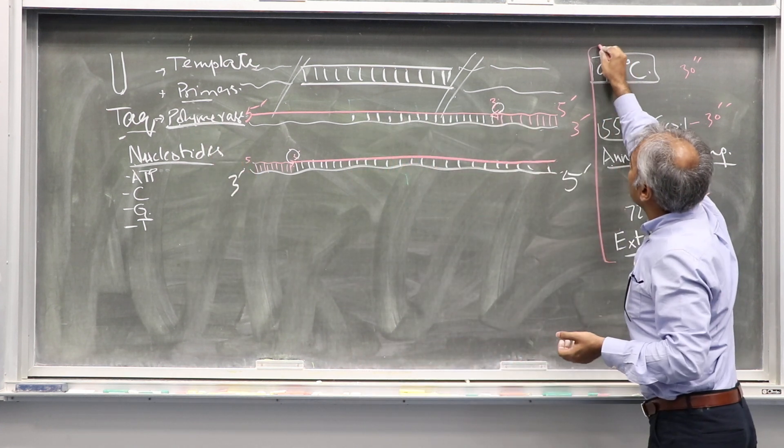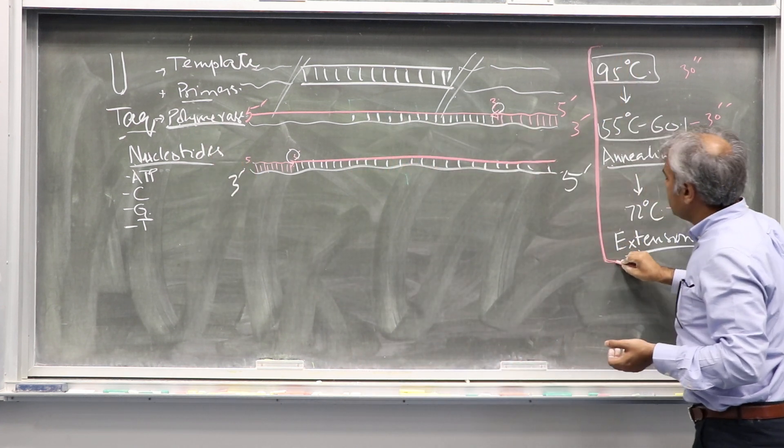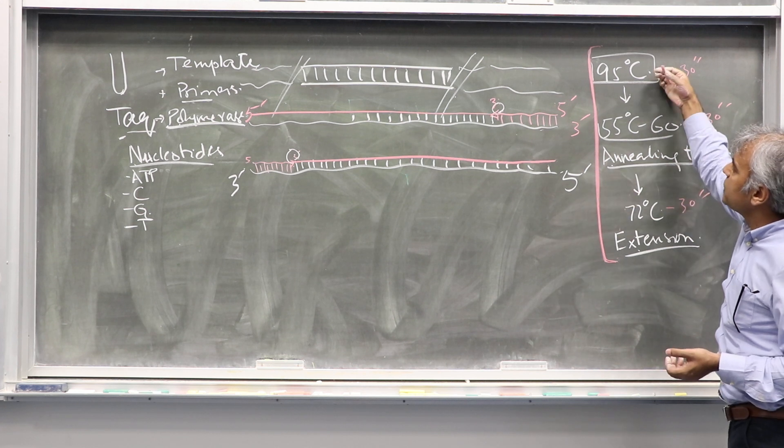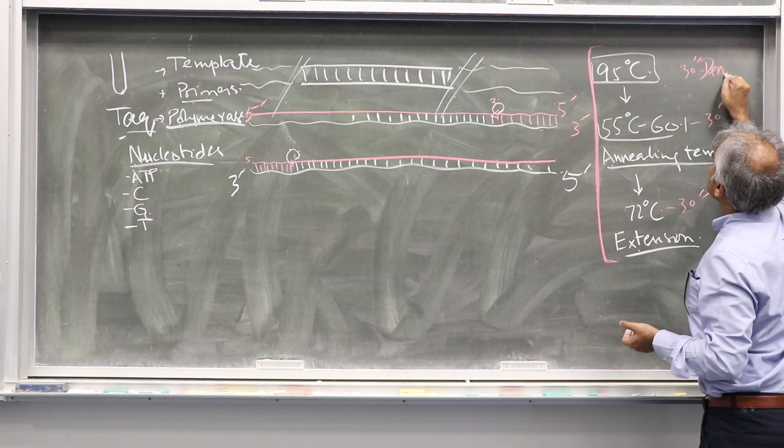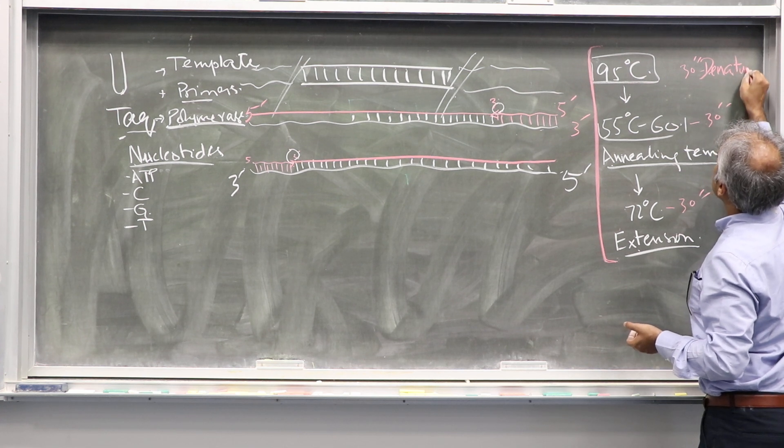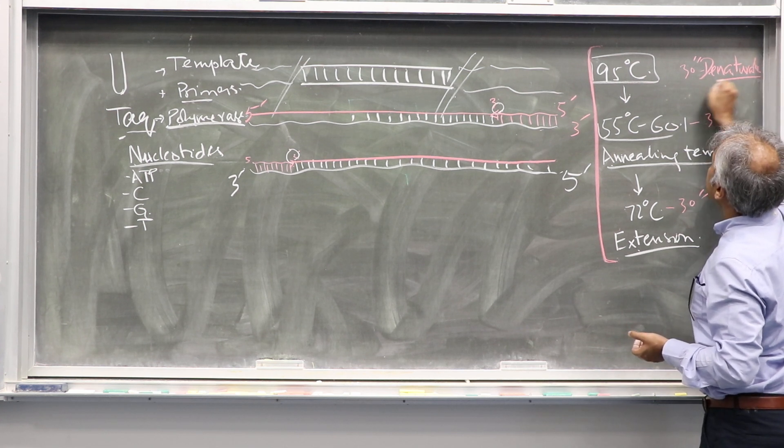Polymerase chain reaction—because now we can tell the machine to repeat this cycle. This heating, 95, is called denaturation temperature. You denature DNA to single strands.